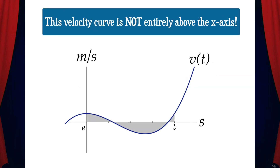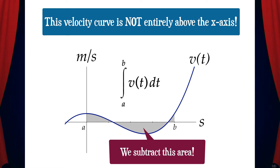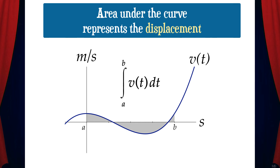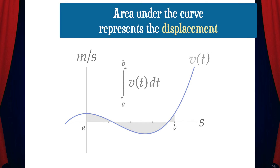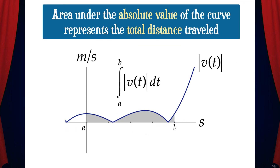However, if we have a velocity curve where some of the curve drops below the x-axis, and we calculate the definite integral from A to B, some of the area will be subtracted out due to the fundamental theorem of calculus. So in this case, the area under the curve represents the net distance traveled from A to B, which is the displacement. If we want the total distance traveled, we would need to find the area under the absolute value of the velocity function, because that would make the entire function lie above the x-axis and the entire definite integral would be positive, with no regions below the x-axis to subtract out.